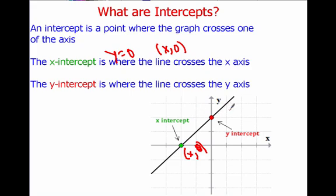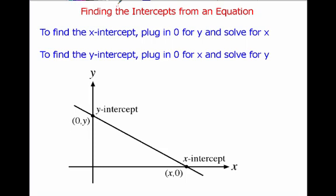Similarly, the y-intercept we can say is at point zero y, because its x-coordinate is always going to be zero and then its y-coordinate is just going to be some number. So when the y-intercept, x equals zero and our point is zero y. So the important thing to remember is that the intercepts are just where the line crosses the x and y-axis.